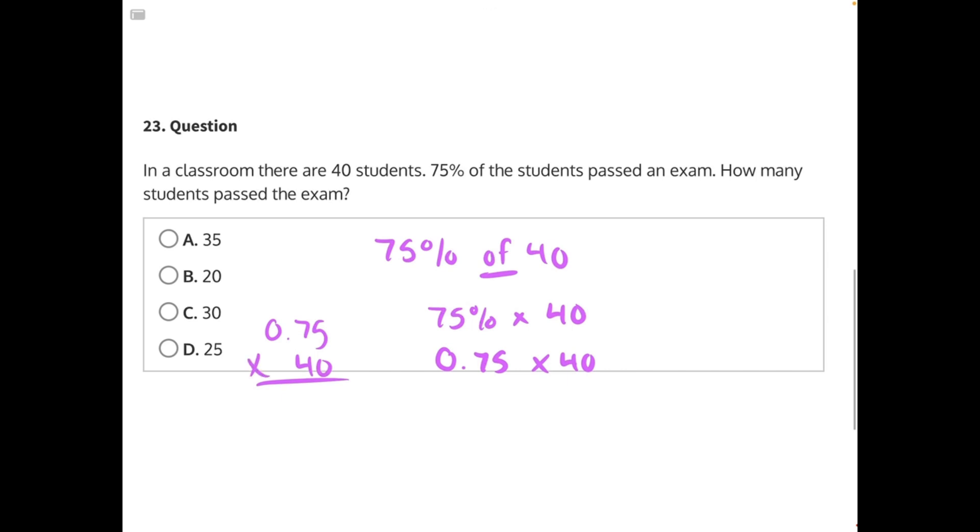The other way you could do it, since this is a very neat and tidy percent that is equivalent to a common fraction that we use, we could just use that fraction instead of the percentage. So 75% is the same as 3 fourths. So we could multiply 3 fourths by 40, which is the same as the fraction 40 over 1.